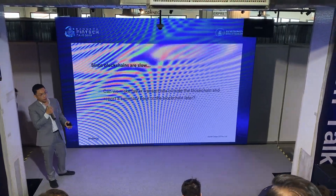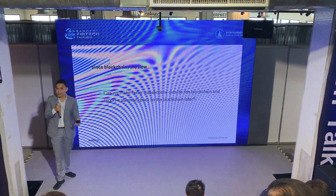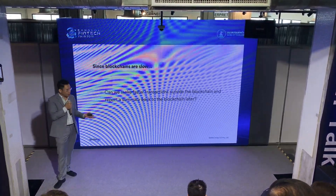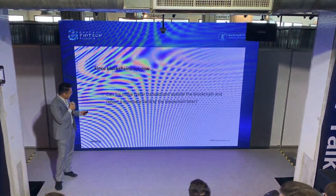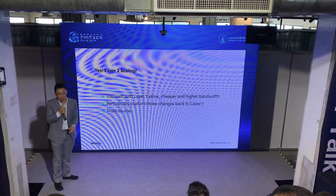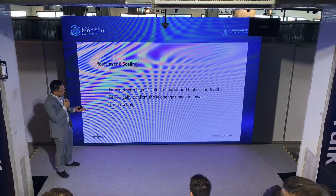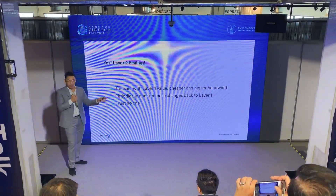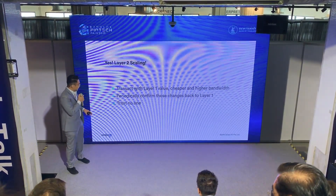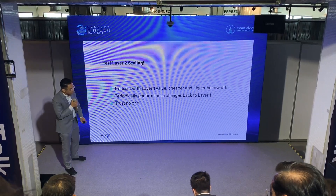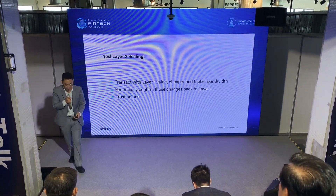There are a lot of global applications to this where you don't care about intermediate states — things like microtransactions, IoT, or games where you only care about the final outcome. With layer 2 scaling, you transact layer 1 value cheaper and at higher bandwidth. I say higher bandwidth rather than faster because we are limited by the finality of the root chain. We periodically confirm those changes back to layer 1, and we maintain the trustlessness of the construction.